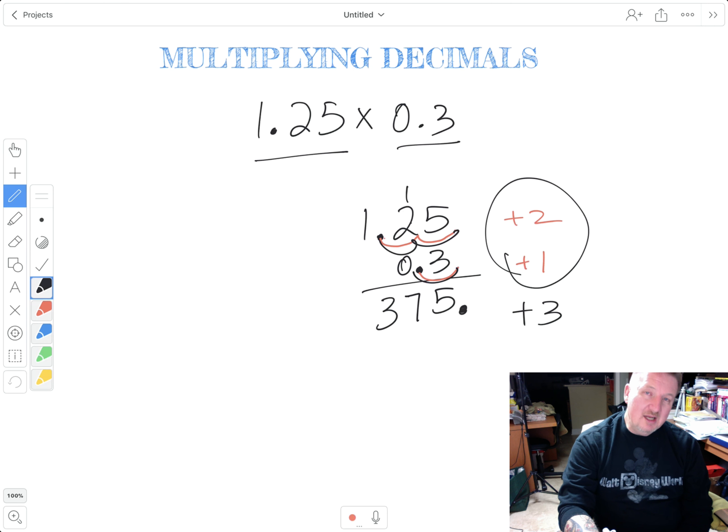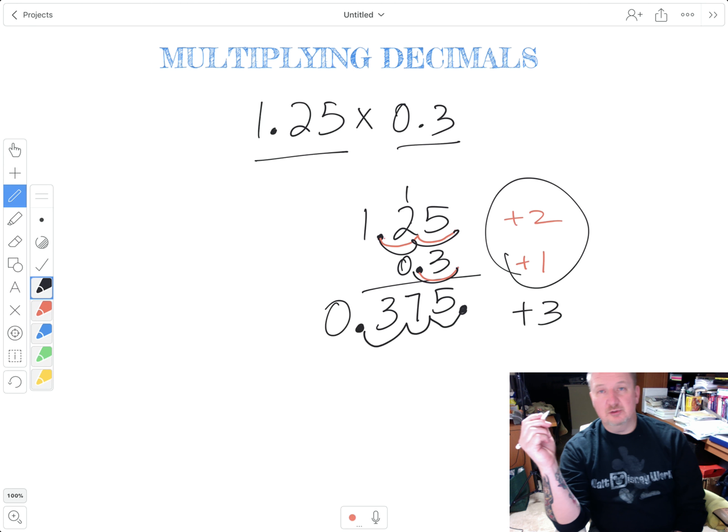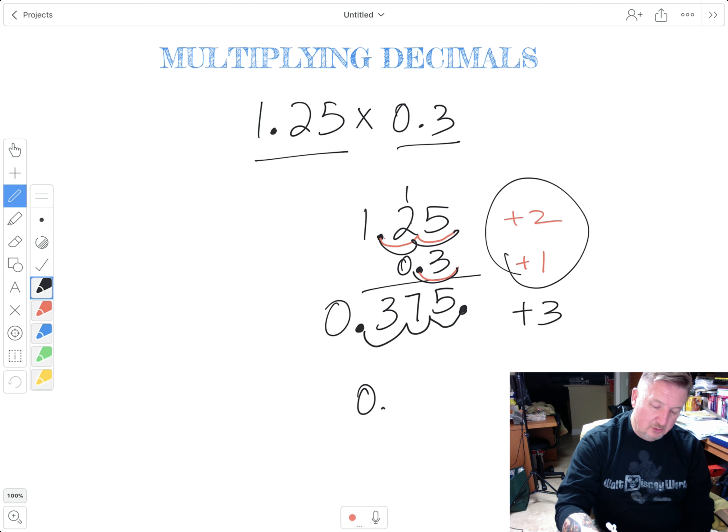So I start at the right of the number, and I count 3 places. 1, 2, 3. If I'm at the end of the number, I go ahead and add a 0 to the front, just for clarification. But that's it. So my answer is 0.375.